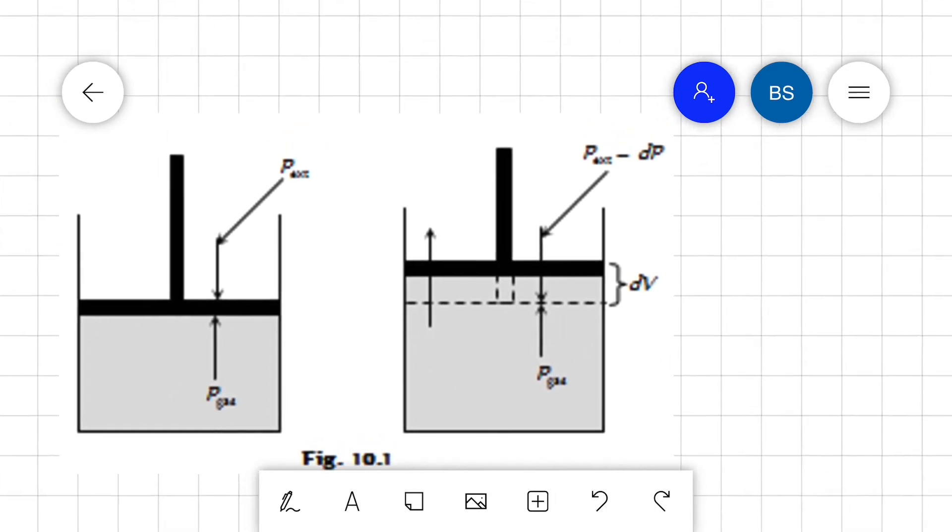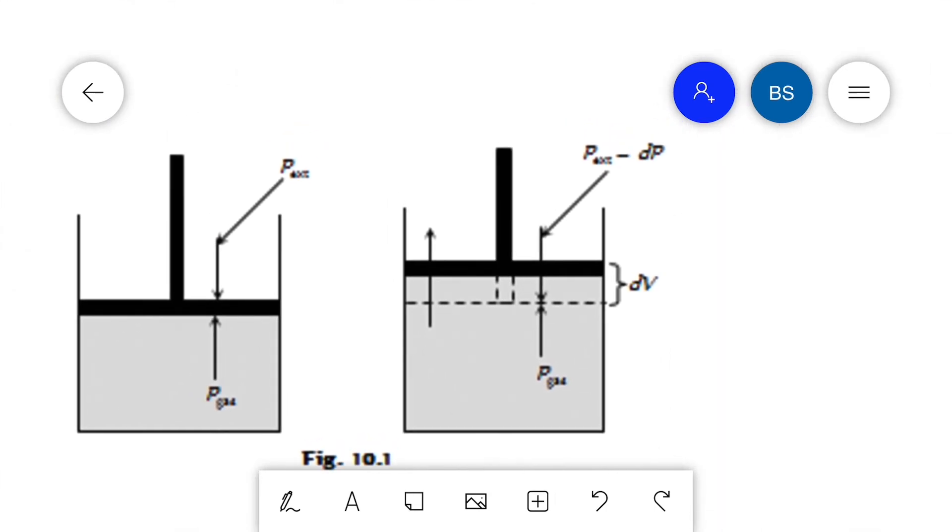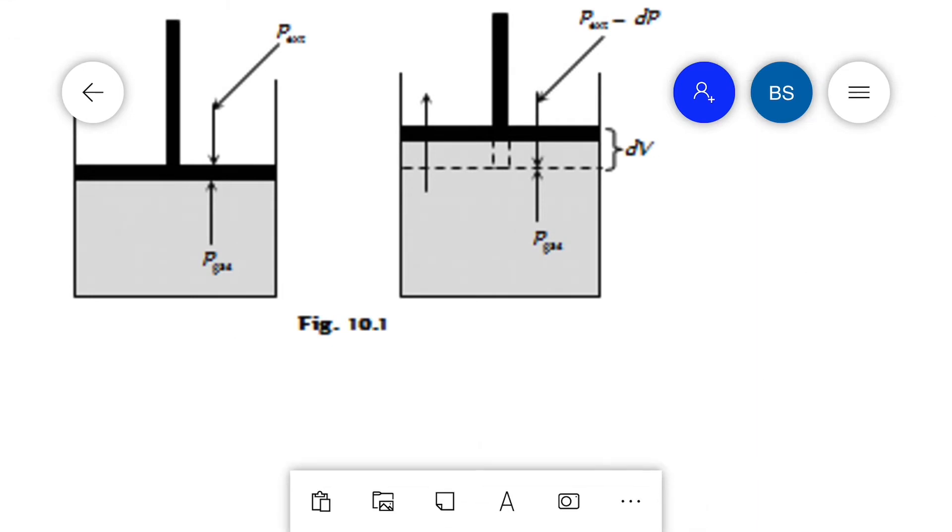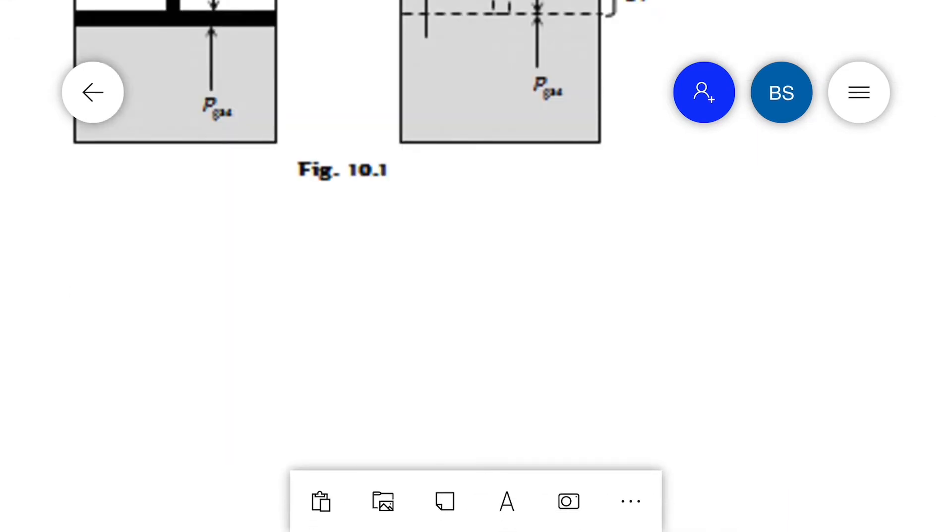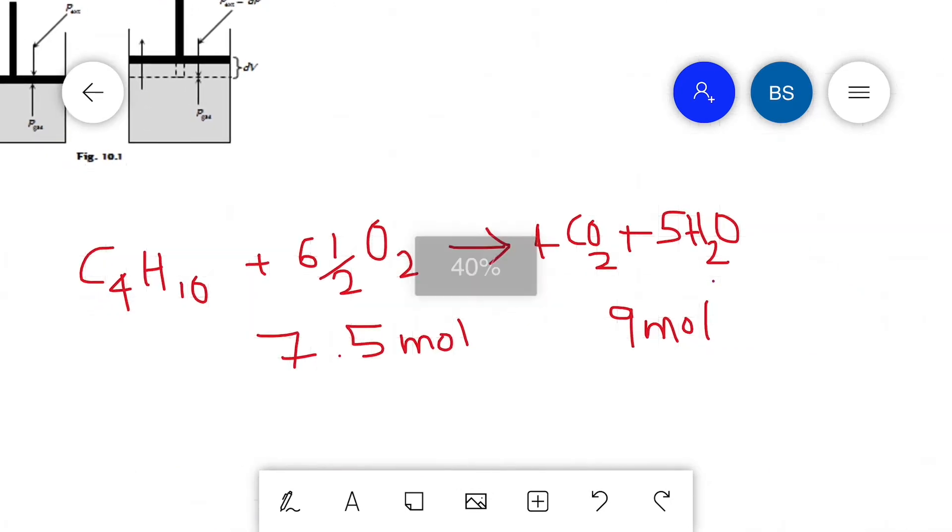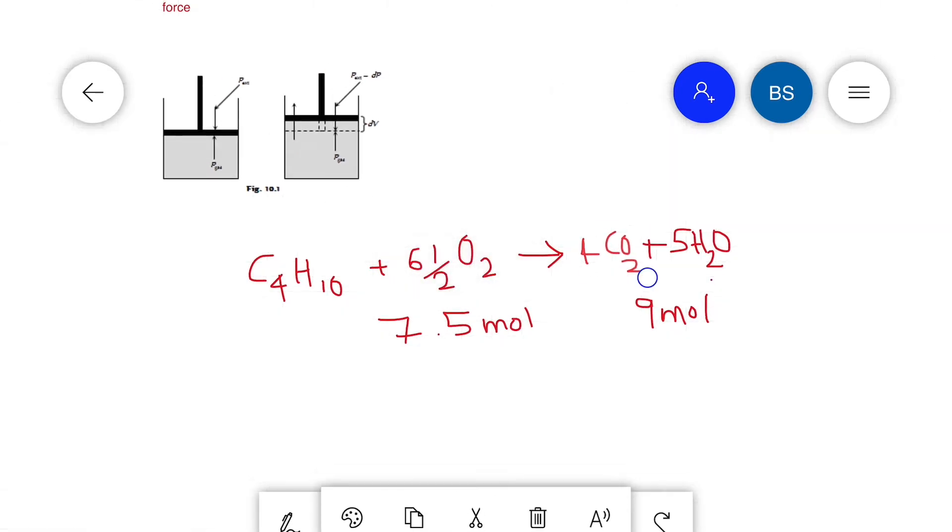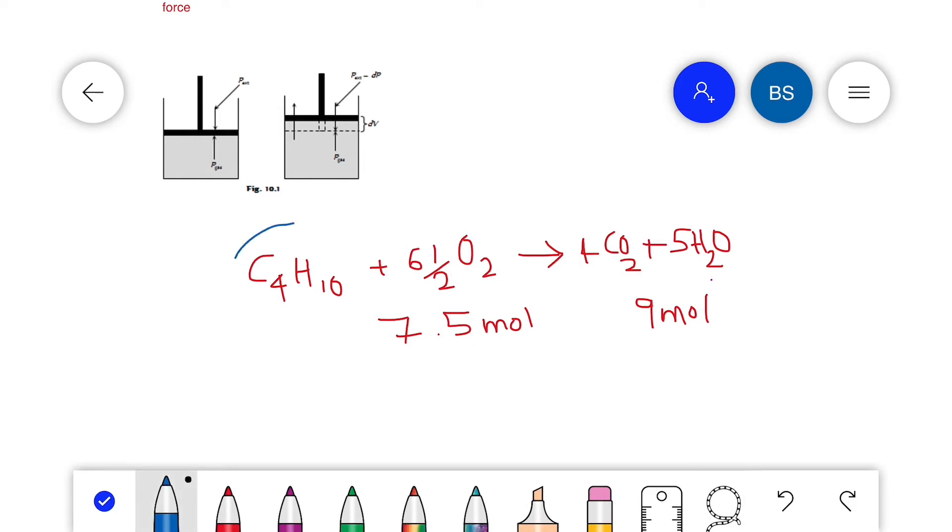Consider the combustion of butane. It reacts with oxygen to give carbon dioxide and water. In terms of moles, we start with C4H10 plus 6.5 moles of O2, totaling 7.5 moles. After completion of the reaction, we get 4 moles of carbon dioxide and 5 moles of water respectively, totaling 9 moles. So in the cylinder there is an extra amount of gas produced.